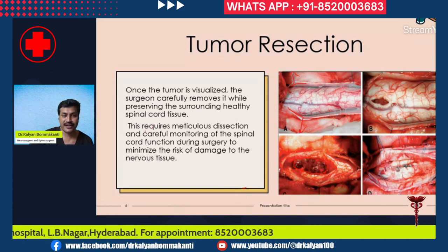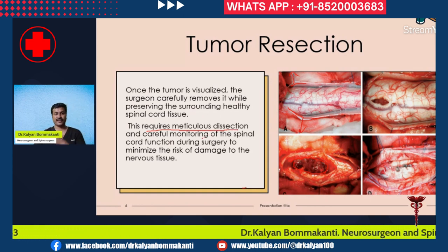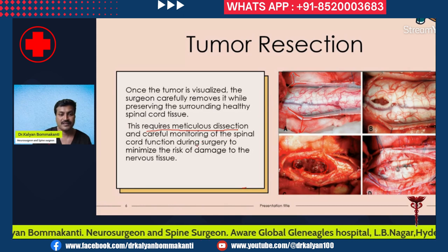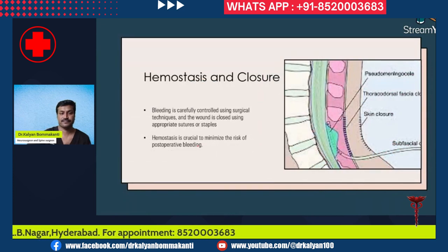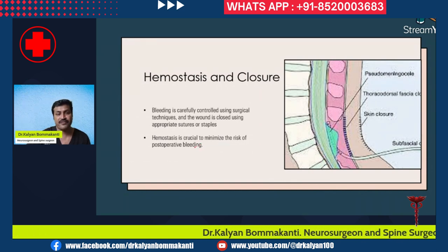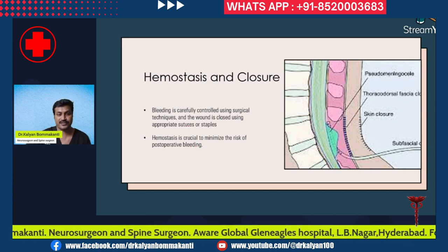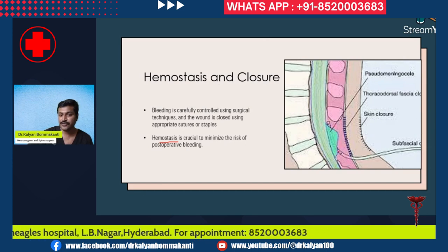Tumor removal requires meticulous dissection and careful monitoring of spinal cord function. Depending on financial conditions, duration of surgery, and institute protocols, this meticulous dissection minimizes the risk of damage to the spinal cord. Controlling bleeding is very important — ensure perfect hemostasis so that bleeding is completely controlled. The wound is then closed using appropriate sutures. Hemostasis is crucial to minimize post-operative bleeding risk, and a drain is usually placed so that any residual bleeding can exit through the drain.